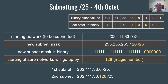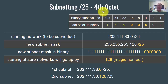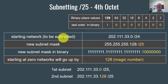Let's take a look at these slides on subnetting. The first one is subnetting a network with a slash 25 subnet mask in the fourth octet of the IP address. In this example, our starting network is 202.111.33.0 slash 25.